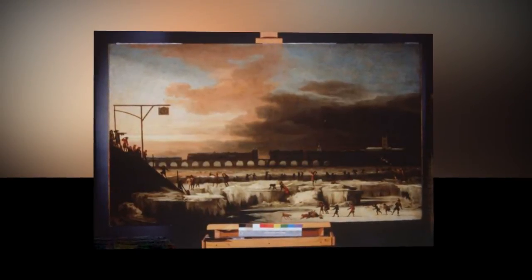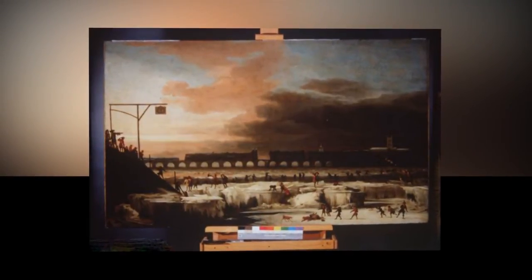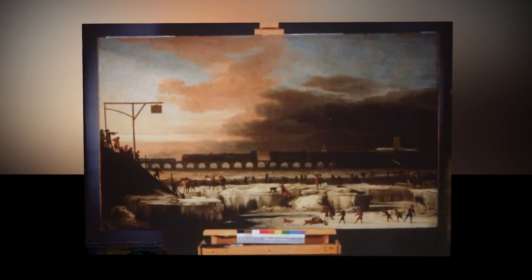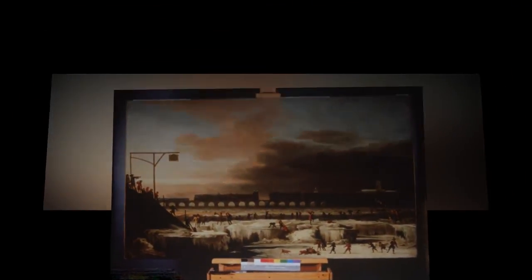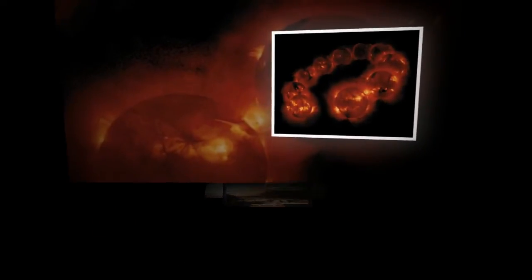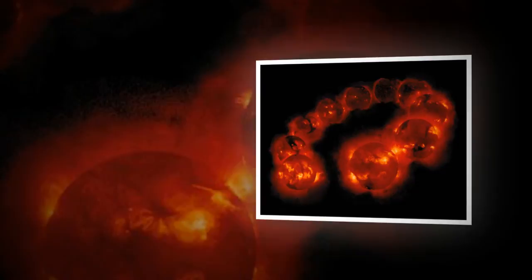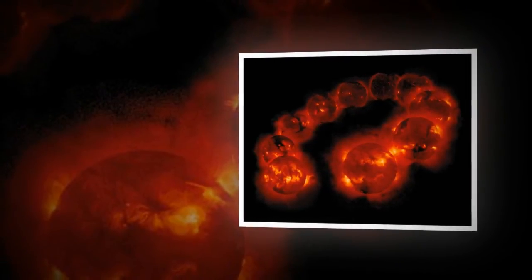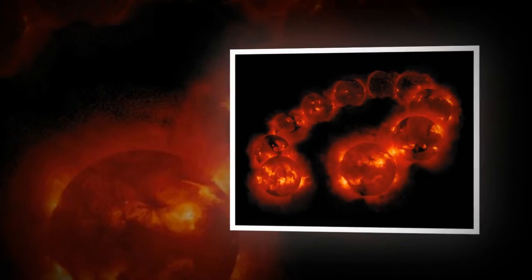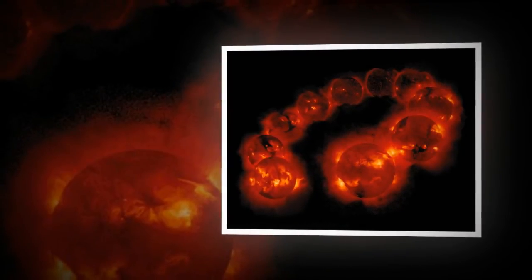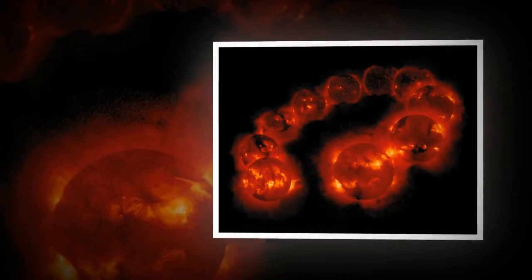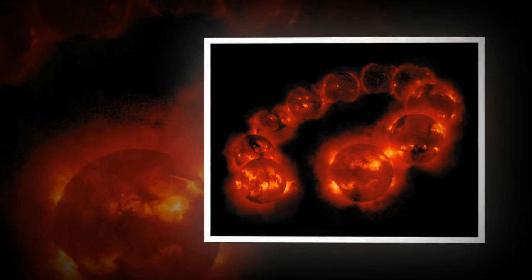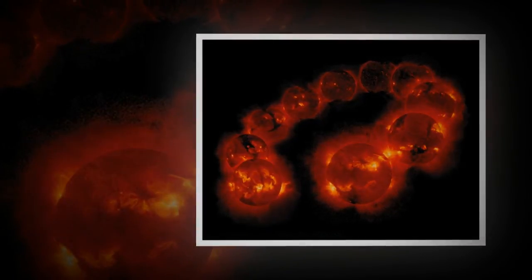Zharkova and her colleagues derived their model using the technique called Principal Component Analysis of the Magnetic Field Observations from the Wilcox Solar Observatory in California. They examined three solar cycles' worth of magnetic field activity, covering the period from 1976 to 2008. In addition, they compared their predictions to average sunspot numbers, another strong marker of solar activity. All the predictions and observations were closely matched.